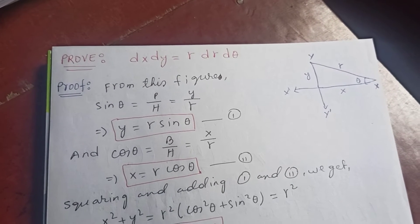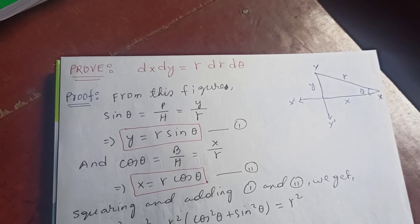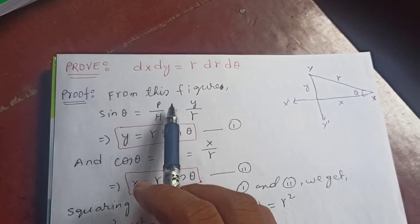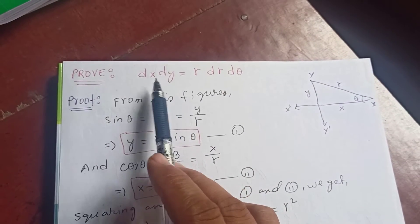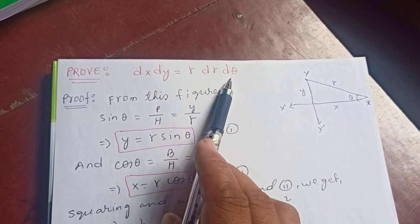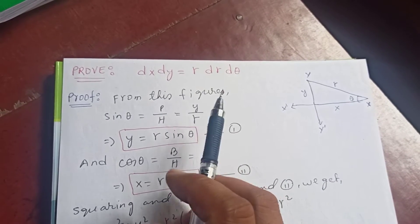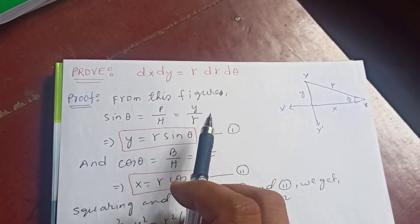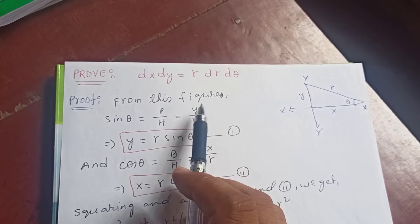Hello guys, today let's try to prove that dx dy is r dr dθ, where x and y is the Cartesian coordinate and r and θ is the polar coordinate.